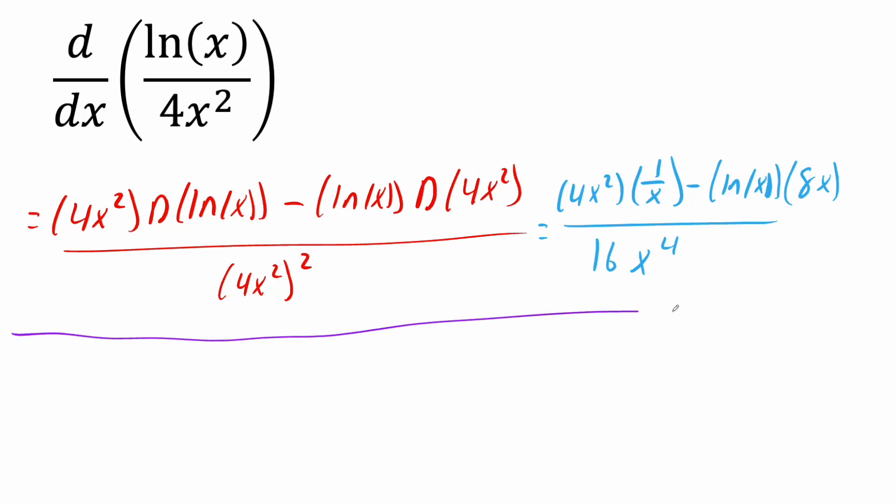And next we can clean it up a little bit. So 4x squared divided by x is just going to give us 4x. And then we can divide by this piece. So we can divide by 16x raised to 4. Then we'll do this piece. So we have minus 8x ln(x) divided by our 16x raised to 4. All I'm doing right now is taking this piece divided by our denominator, this piece dividing by our denominator, I'm splitting it up.